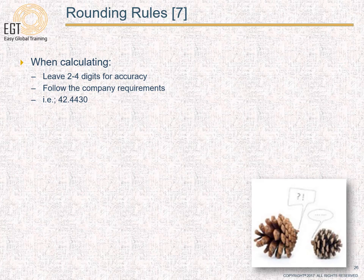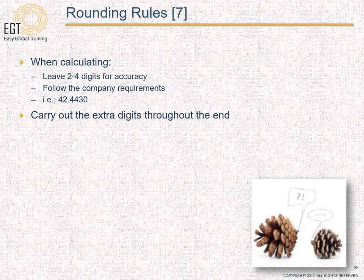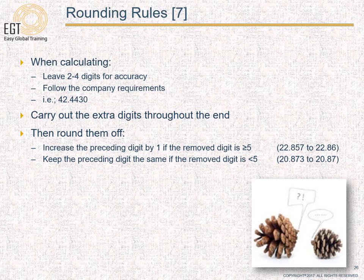When calculating, try to leave at least two to four digits for accuracy depending on your company requirements. Carry these extra digits throughout all calculation steps until the very end, then round them off. To round off, increase the preceding digit by one if the removed digit is equal to or larger than five, and keep the preceding digit the same if the removed digit is less than five. For example, 22.857 rounds to 22.86, and 20.873 rounds to 20.87.